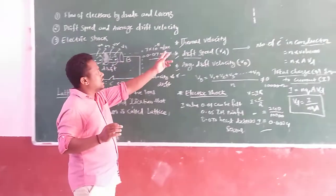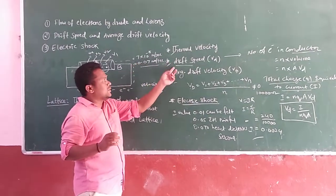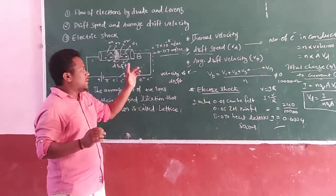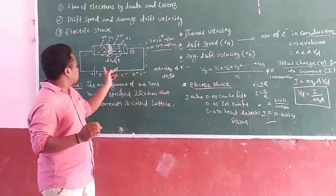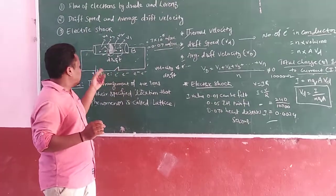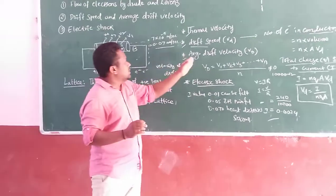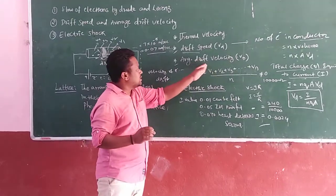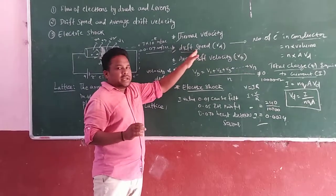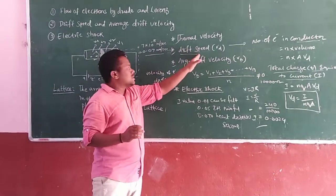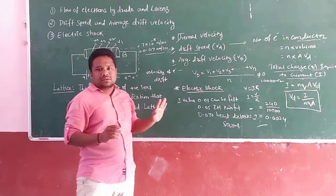In this chapter, you have to remember: thermal velocity is the electron velocity before connected to the battery, where electrons move randomly. Drift velocity occurs after connecting to the battery or power supply — this is the drift velocity. Drift speed is always responsible for electric current, and average drift velocity cannot accept a zero value.